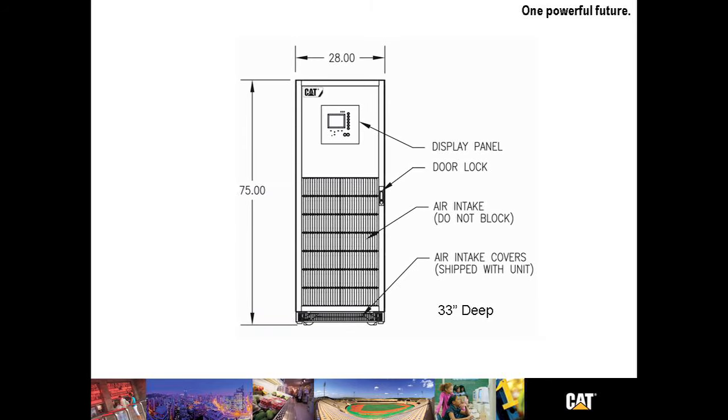The UPSB-130 is 75 inches tall, 28 inches wide, has a very large HMI interface. You notice the grates there at the bottom, the air intake covers. This unit is also 33 inches deep.